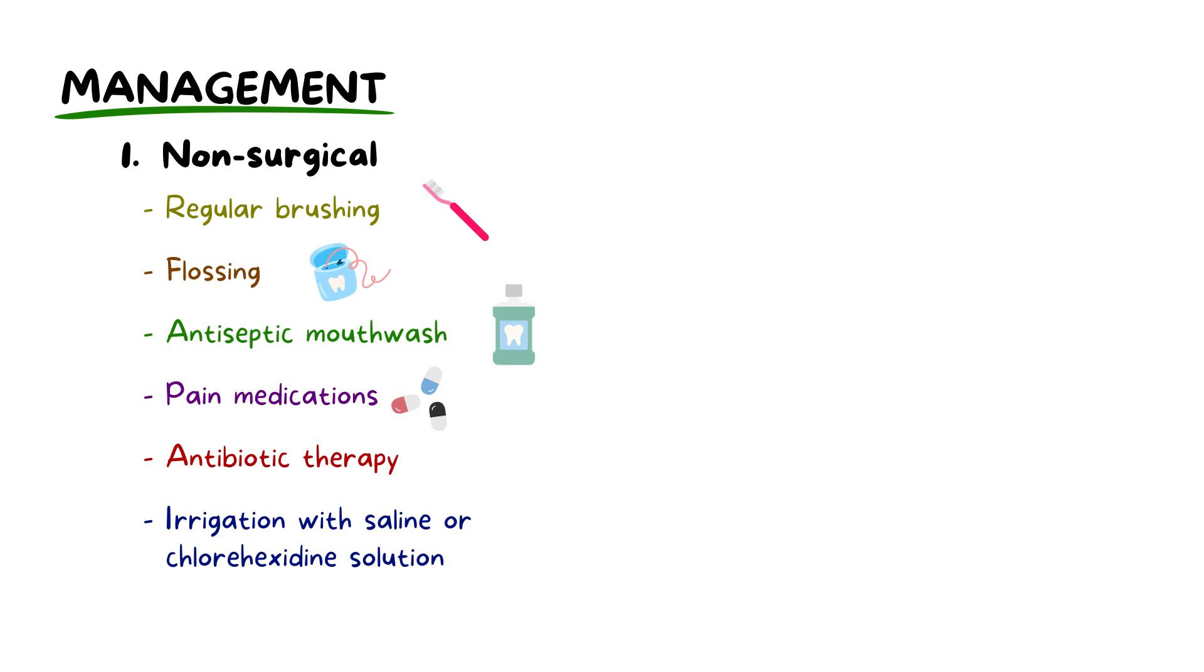These non-surgical methods may not fully resolve pericoronitis, as the operculum can still trap food and bacteria. Thus, these are temporary solutions pending definitive treatments. The definitive treatments include surgical interventions, primarily extracting the problematic tooth, and if not possible, then removing the operculum is another option.